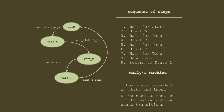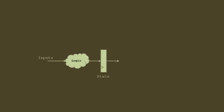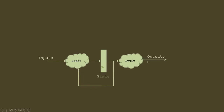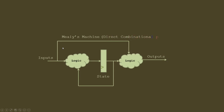The benefit of the Mealy state machine is fewer states. However, the key difference is that in a Moore machine output is only a function of state, while in a Mealy machine output also depends on inputs. This means there is a direct combinational path from input to output. Normally it is recommended to have registered outputs, which is the undesirable aspect of Mealy machines. Personally I prefer Mealy machines and if required I just add a separate register at the output.